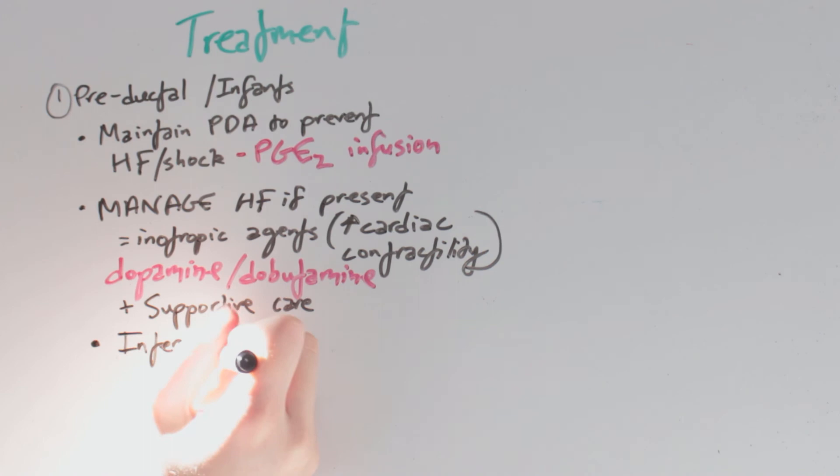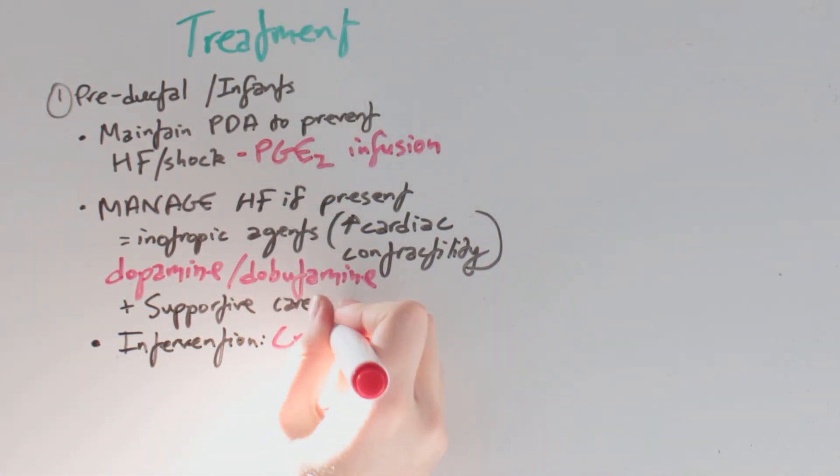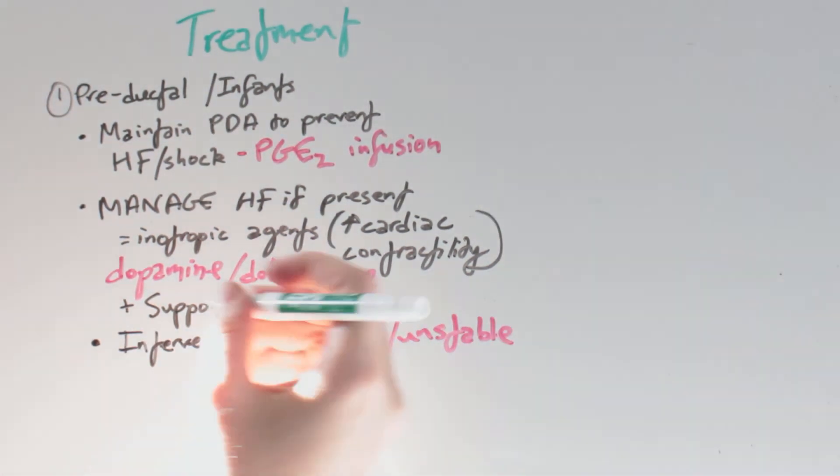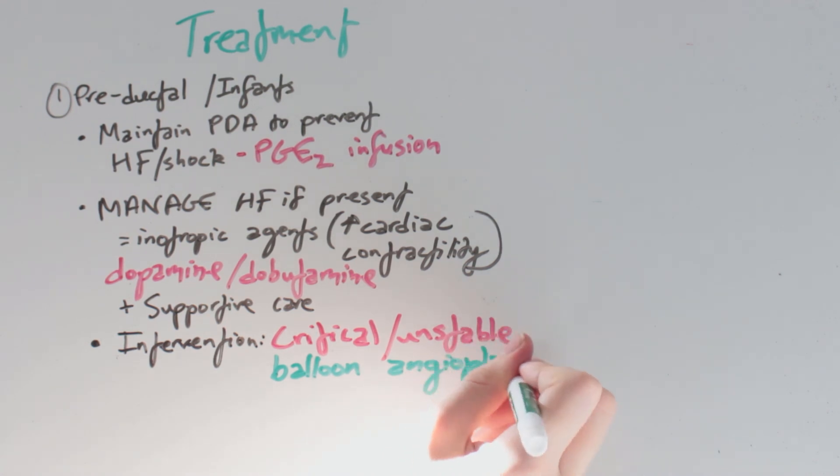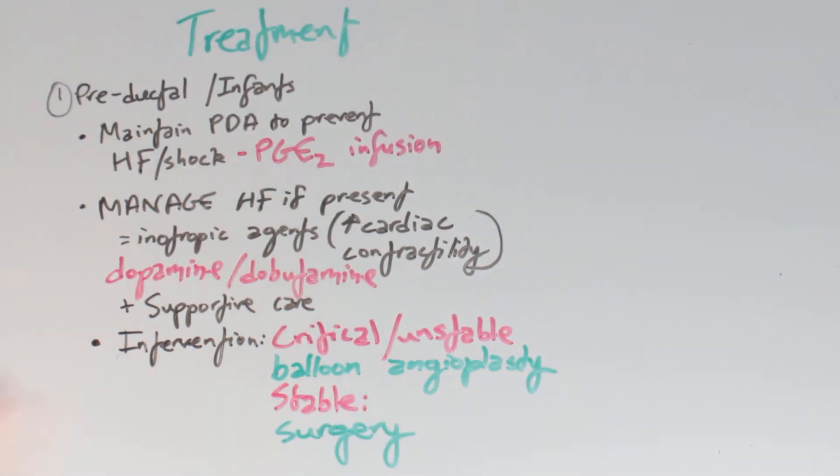The intervention for this type depends on whether the infant is unstable, in which case balloon angioplasty should be performed, or if they are stable, surgery is the preferred intervention.